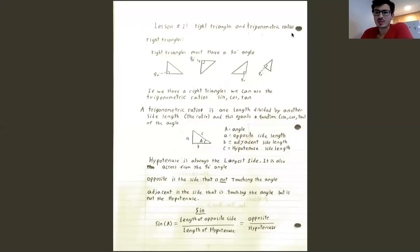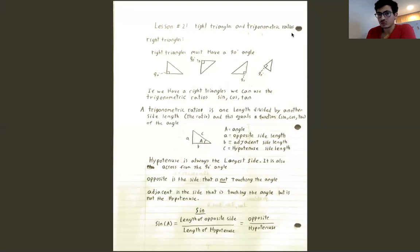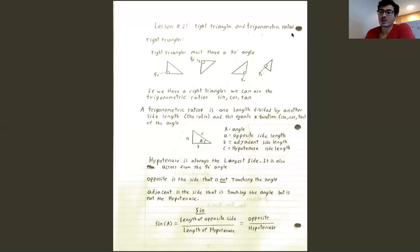Good morning class. Today we're going to do lesson number 21 on right angles and trigonometric ratios. I'm not too sure what you know, so I thought I'd start as basic as possible. Normally we would do this in maybe two or three weeks, but we're going to do it in two online lessons, condensing the last three weeks of the course because we're ending a week earlier and the course has been condensed because of online lessons.